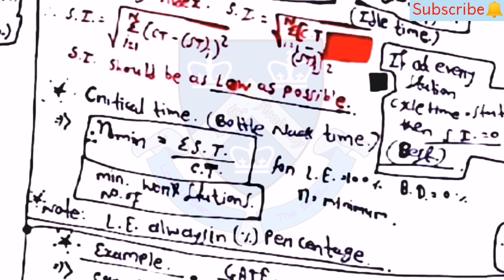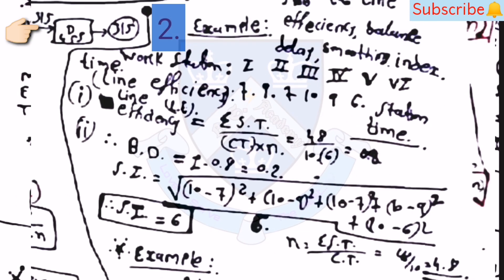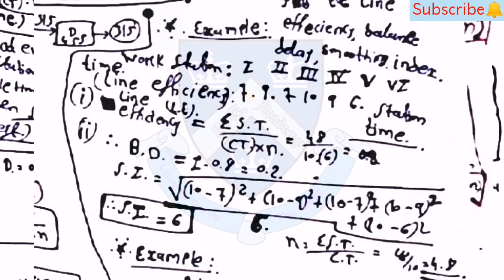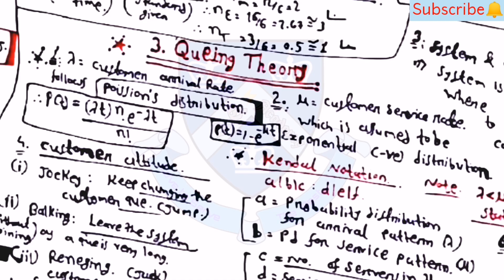Note that line efficiency is always expressed as a percentage. There is one example from the GATE examination. The third topic is queuing theory. Lambda (λ) is the customer arrival rate, which follows a Poisson distribution: P(t) = (λt)^n · e^(−λt) / n!.